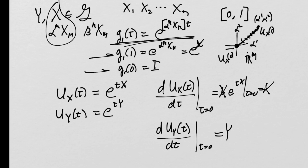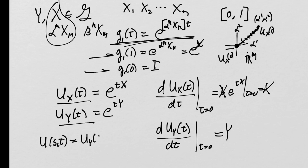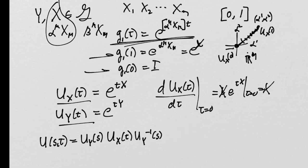Now we create a new group element U(S, T) = UY(S) · UX(T) · UY⁻¹(S). Since UY(S), UX(T), and UY⁻¹(S) are all group elements, their product is also a group element. We call it U. This is a completely legitimate group element, so there must be some generator — some member of our vector space — that when exponentiated gives this element.